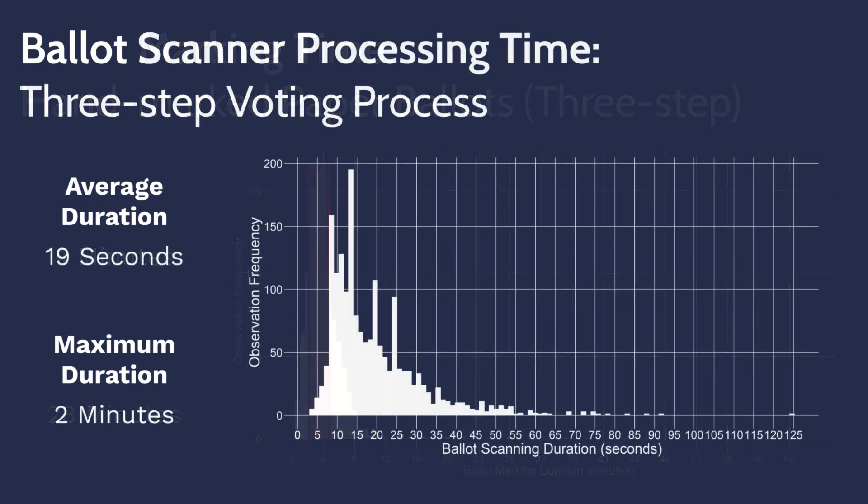The ballot scanning step in the three-step process takes voters 19 seconds on average, but may take up to two minutes to cast their ballot, with the majority of voters scanning their ballots in 11 to 24 seconds.